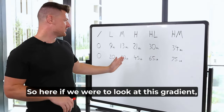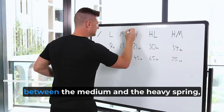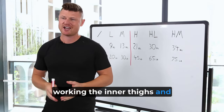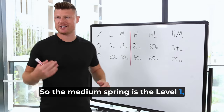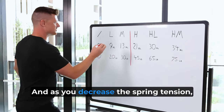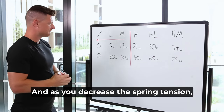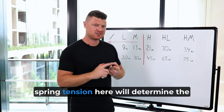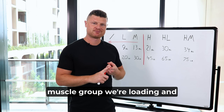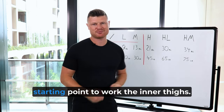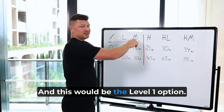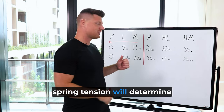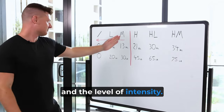If we look at this gradient, in the middle between the medium and the heavy spring, this is the difference between working the inner thighs and working the outer thighs. The medium spring is level one — the beginner level of working the inner thighs. As you decrease the spring tension, it means you have to work harder to support yourself. So spring tension here will determine the muscle group we're loading — the inner thighs — and the level of intensity. The medium spring is the starting point, which is level one. The light spring would be level two, and no spring would be level three.